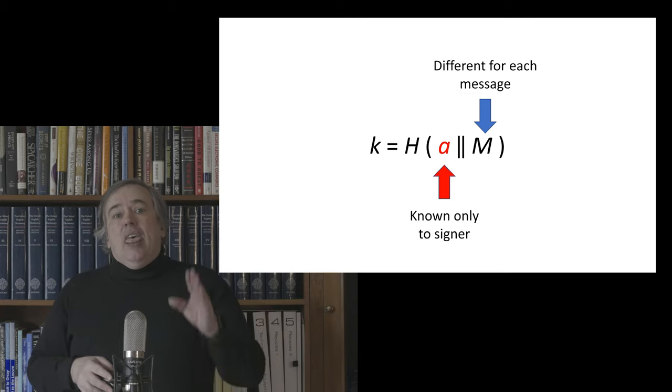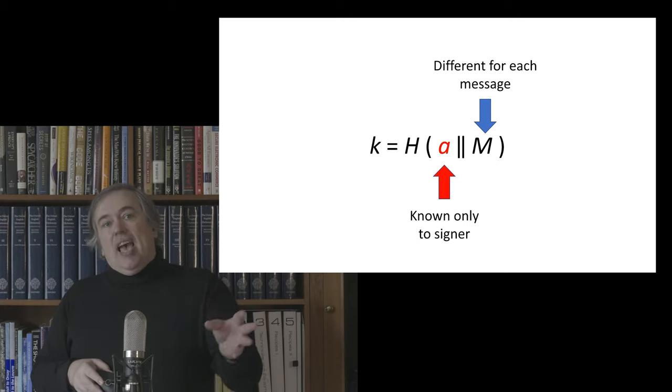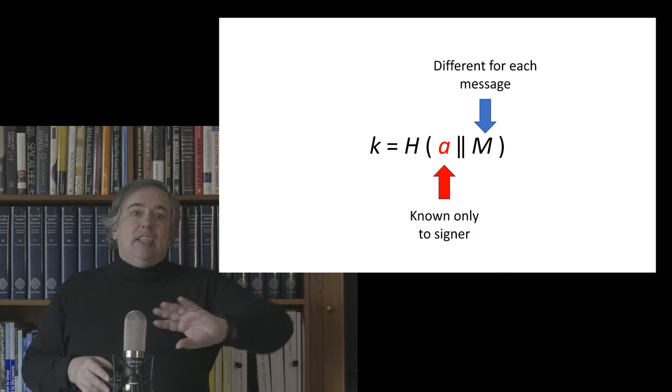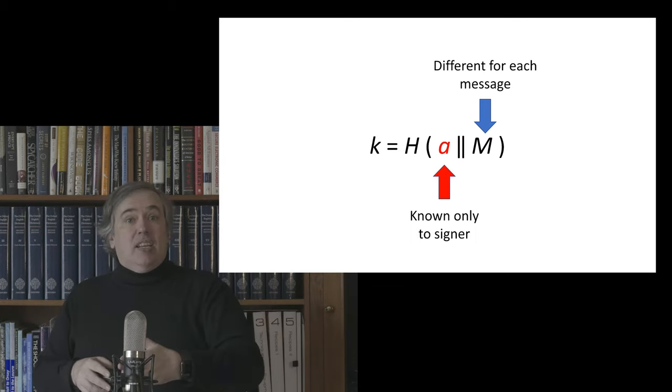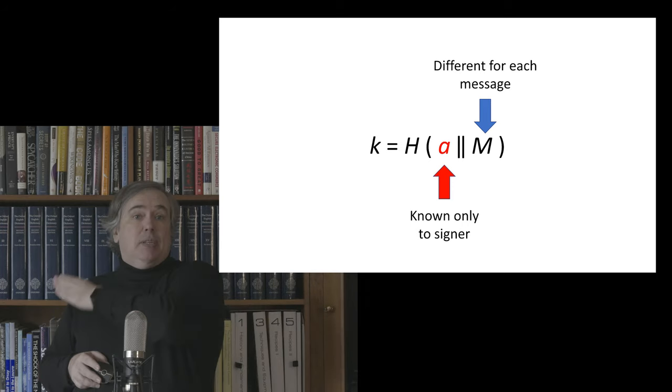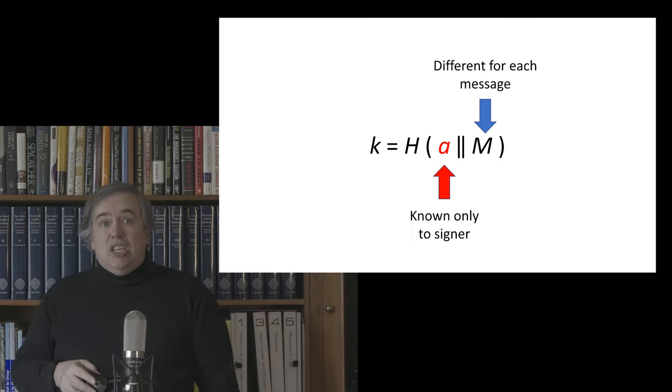And the reason for this particular construction is that because it's deterministic, we can then write a unit test and we can check to see that if we initialize this cryptographic hardware module with a particular public-private key and we tell it to sign this particular document, we can check to see that the right value of k is being produced because the signature is deterministic.